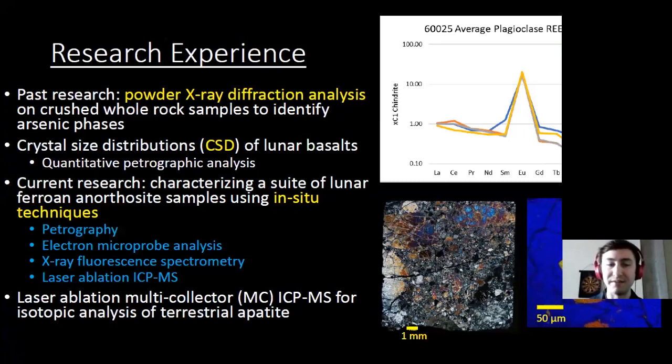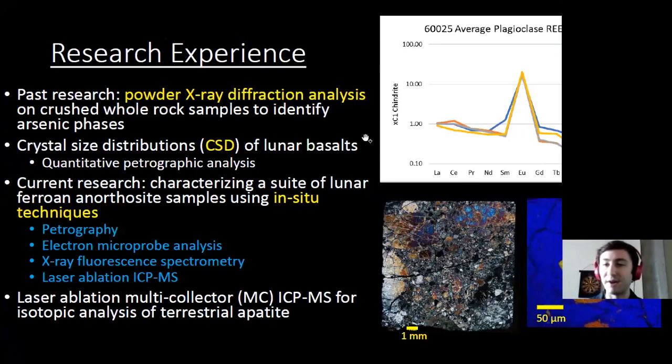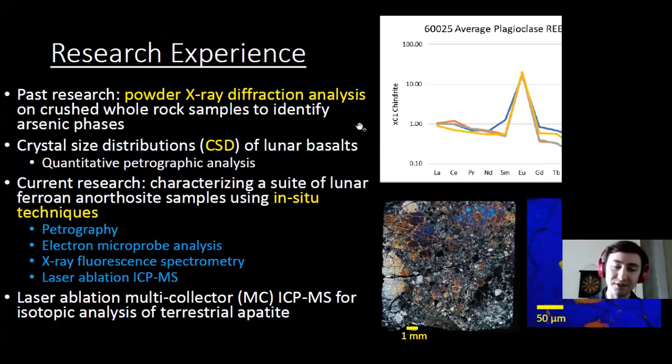This is a quantitative petrographic analysis technique I've used to determine whether certain samples or lunar basalts are endogenous or impact melts. The primary focus of my current research is characterizing a suite of lunar ferroan anorthosite samples using a variety of different in-situ techniques — including petrography, electron microprobe analysis, X-ray fluorescence, and laser ablation ICP-MS, a mixture of non-destructive and destructive techniques. I also have some experience with laser ablation multi-collector ICP-MS for isotopic analysis in terrestrial apatite, which I did with Dr. Tony Simonetti as a directed study.